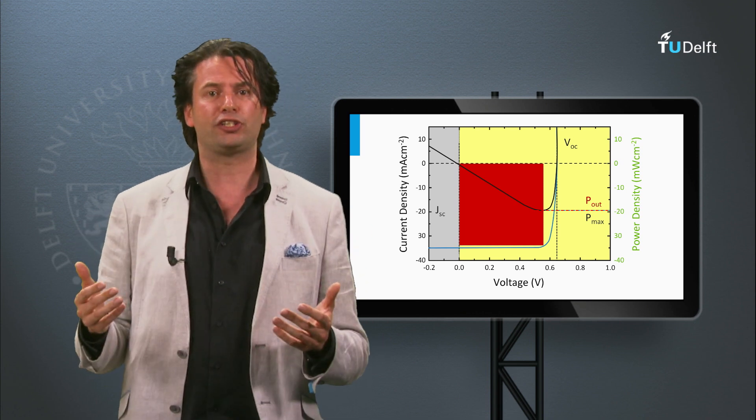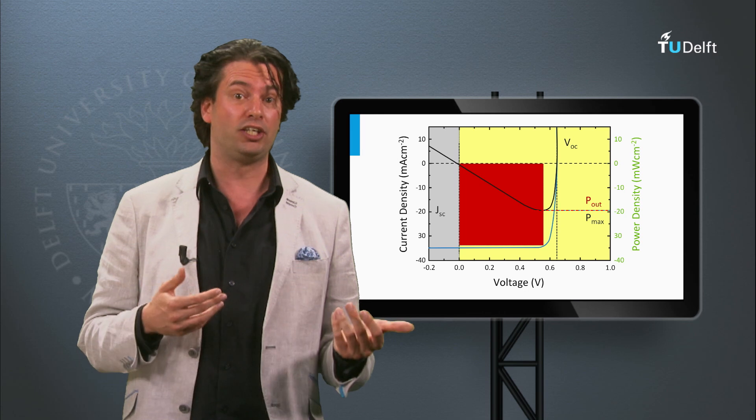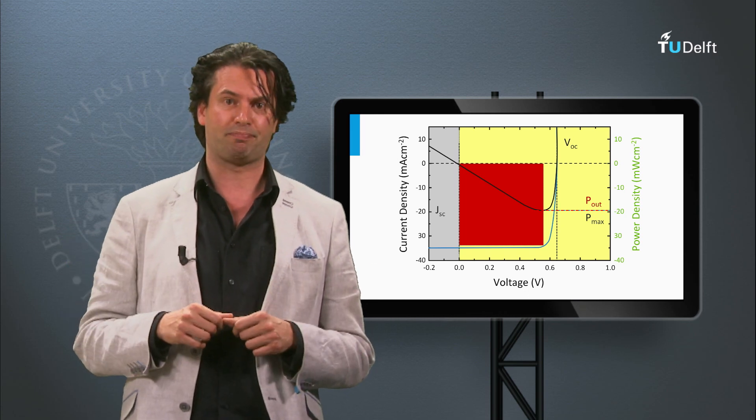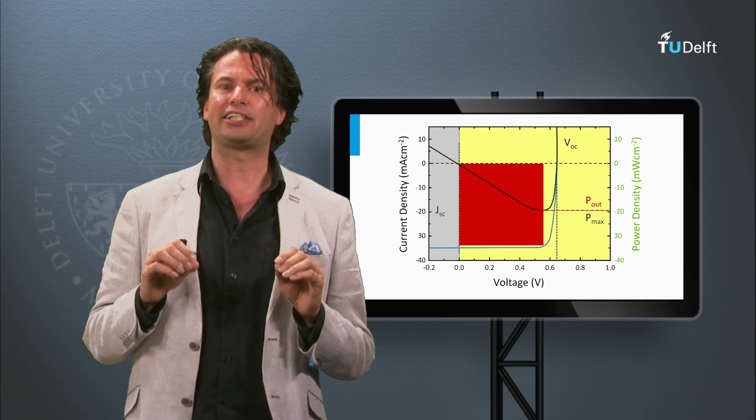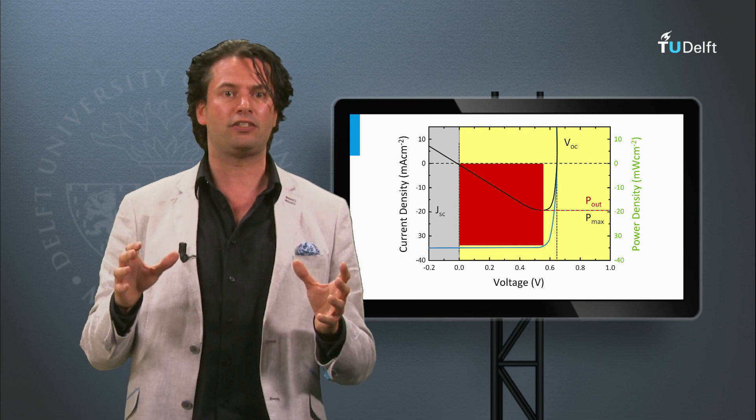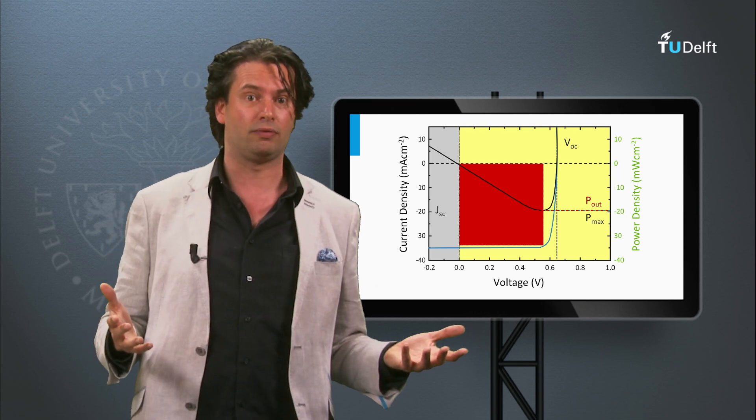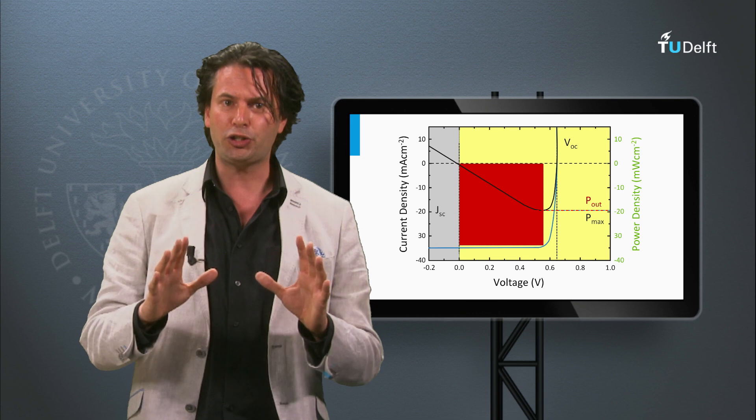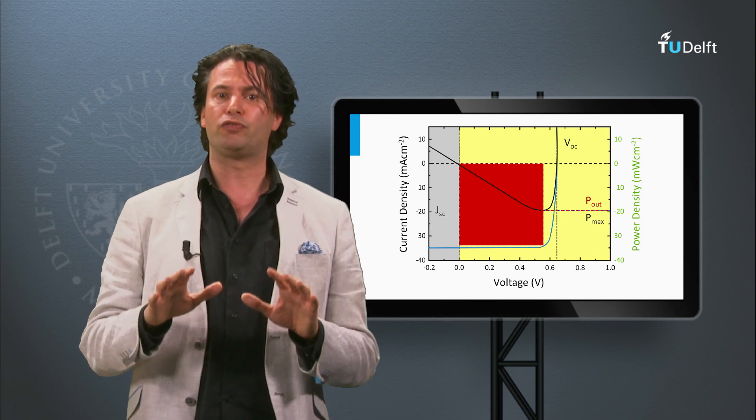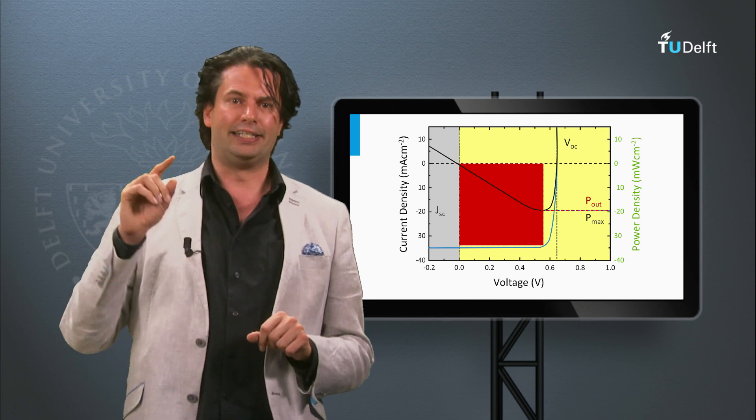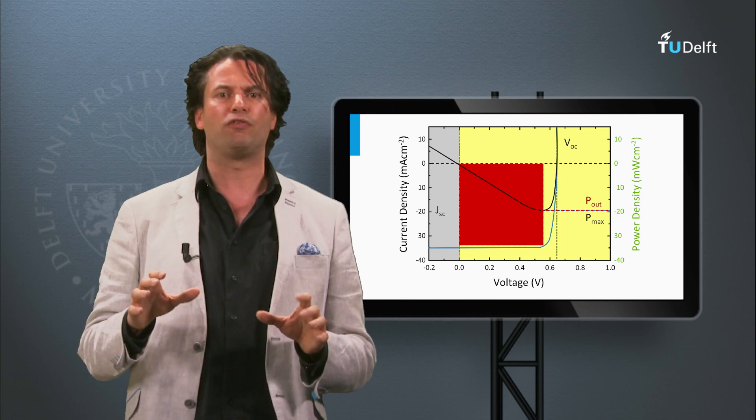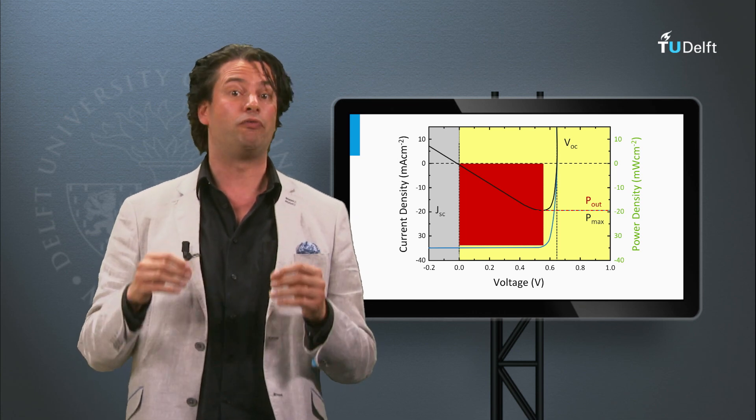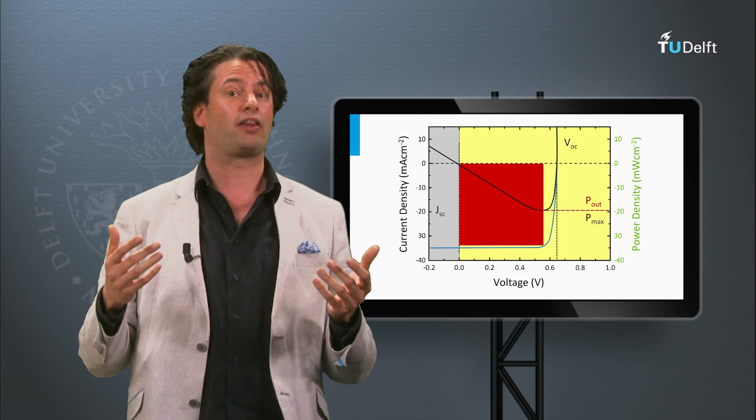So far we have discussed the external parameters of an ideal and non-ideal solar cell this week. The remainder of this week we will discuss how these external parameters are affected by the design of the solar cell. I will introduce you general design rules for solar cells. These design rules will help you to understand the performance of the different PV technologies, which will be discussed in the coming three weeks.